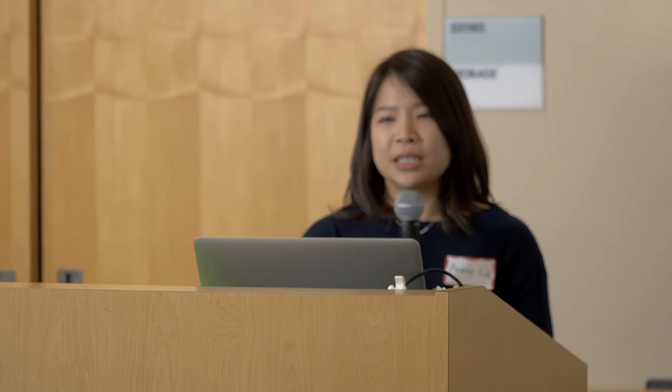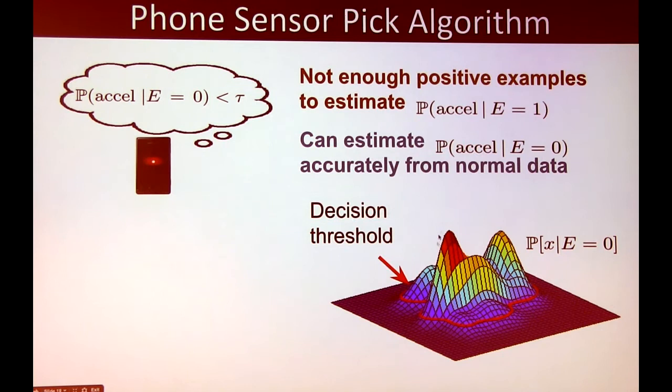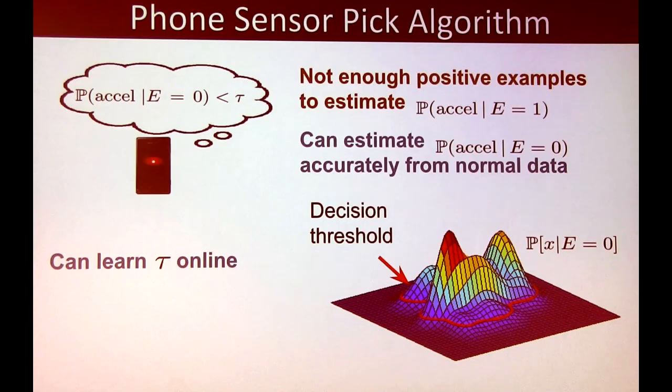The solution is anomaly detection. Although we don't have enough positive examples, we do have a lot of negative examples, so we can estimate the probability of observing a certain acceleration given no event. We learn a Gaussian mixture model of the sensor spectrum produced on the phone. Each peak in the Gaussian mixture might represent walking, running, or sitting. We learn a threshold such that if we observe a signal beyond it, we declare a detection. This threshold can be learned online.